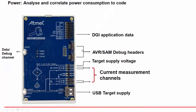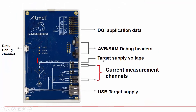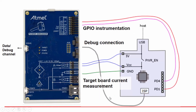Here we have the AVR and SAM debug headers. We have a target supply voltage so you can power your application. There are two current measurement channels — channel A is up to 100 milliamps, and channel B is a high current channel of up to one amp.